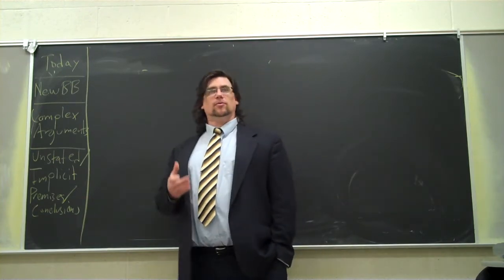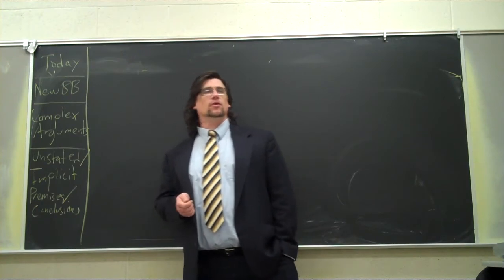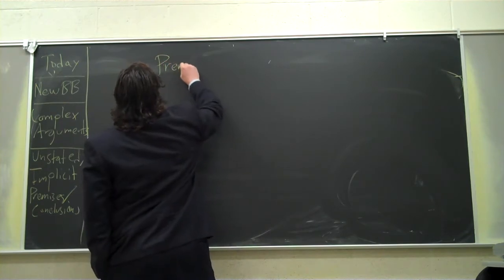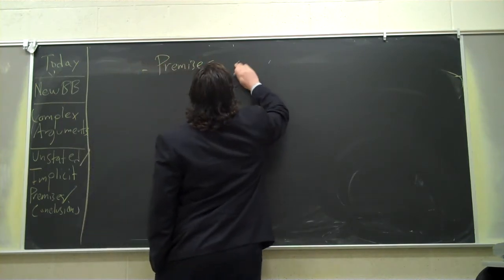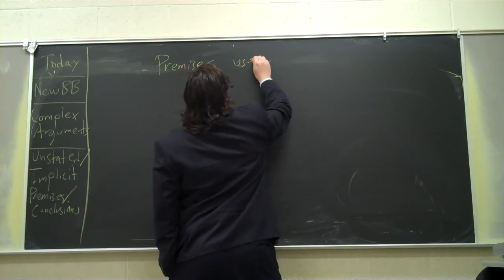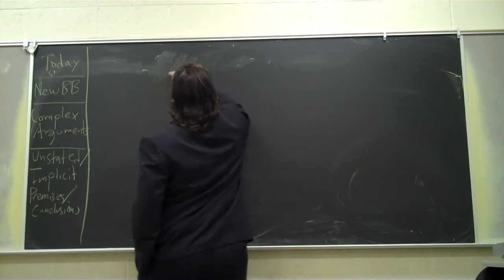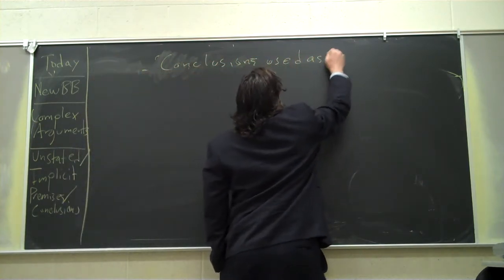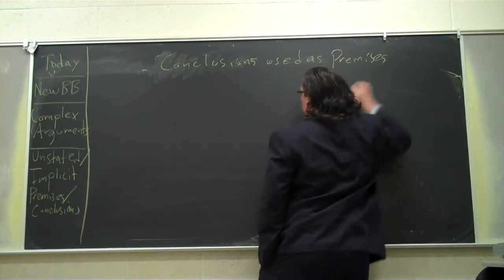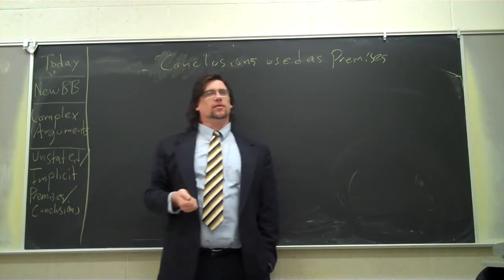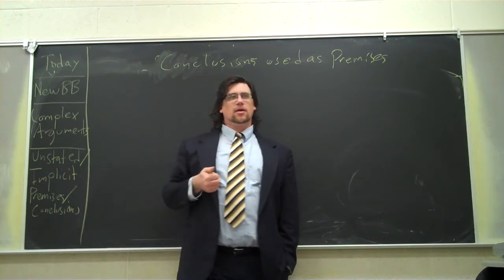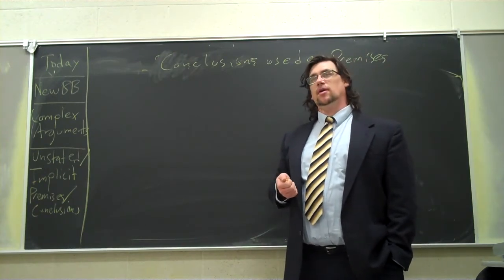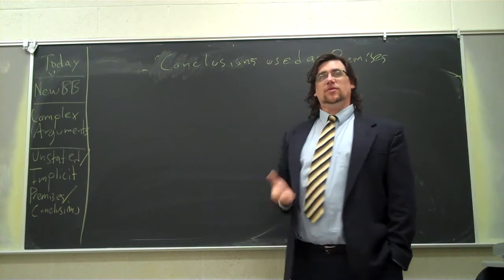The first thing we're going to talk about is what we call complex arguments. Your book doesn't use this term. Your book talks about premises and conclusions. Actually, I think it talks about it in terms of conclusions used as premises. If you haven't been following along, you might say, well, wait a second. A conclusion is one kind of thing, a premise is another kind of thing in an argument. So how can something be a conclusion and a premise?